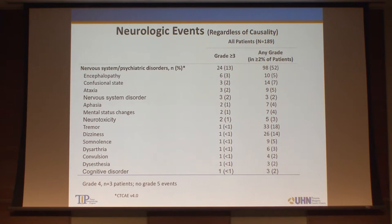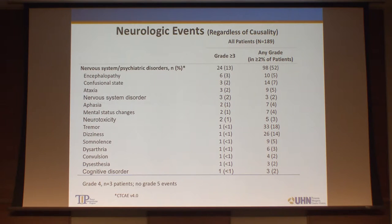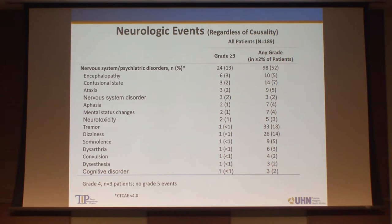Neurologic events are a little more frequent than with other drugs — grade three or greater in 13%, any grade in about half of patients. When you group encephalopathy, confusional state, aphasia, neurotoxicity together, you get a sense that this is something seen roughly 10% of the time when clinically meaningful.